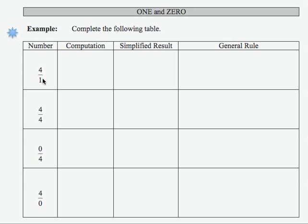We have 4 over 1. If I'm going to compute that, I'm going to take 4 divided by 1, and the simplified result there is 4.